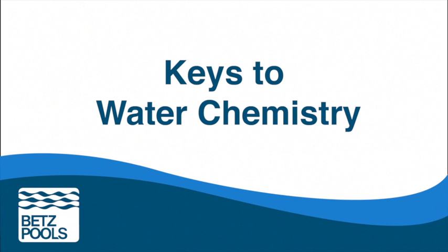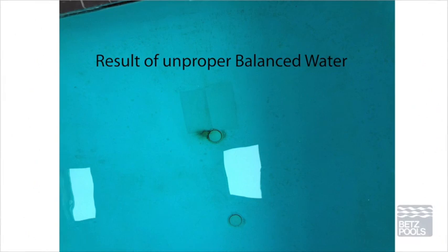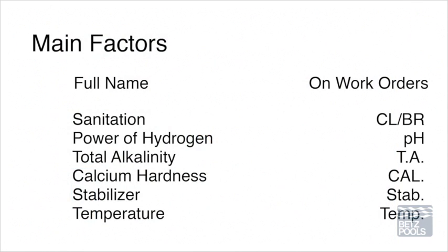Before we test the pool water, it's important to know why we test and balance it. Balancing the water is for the protection of the homeowner's investment. Balanced water will protect the pool or spa surface and equipment from deteriorating, and most importantly, keep the water safely disinfected to keep swimmers safe. The main factors of water balance are pH, alkalinity, calcium hardness, temperature, and total dissolved solids, with chlorine or bromine being the measurement of sanitizer.